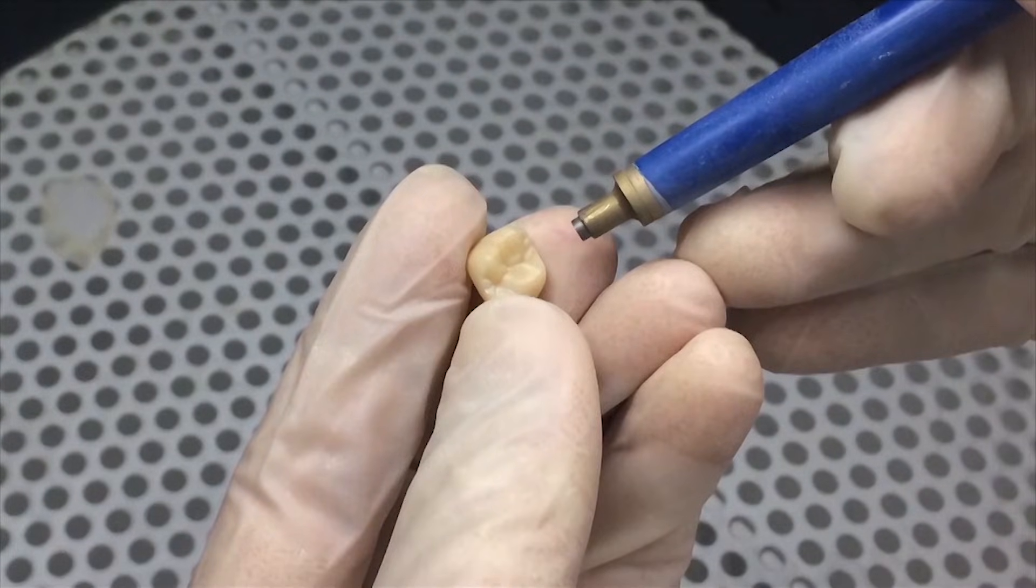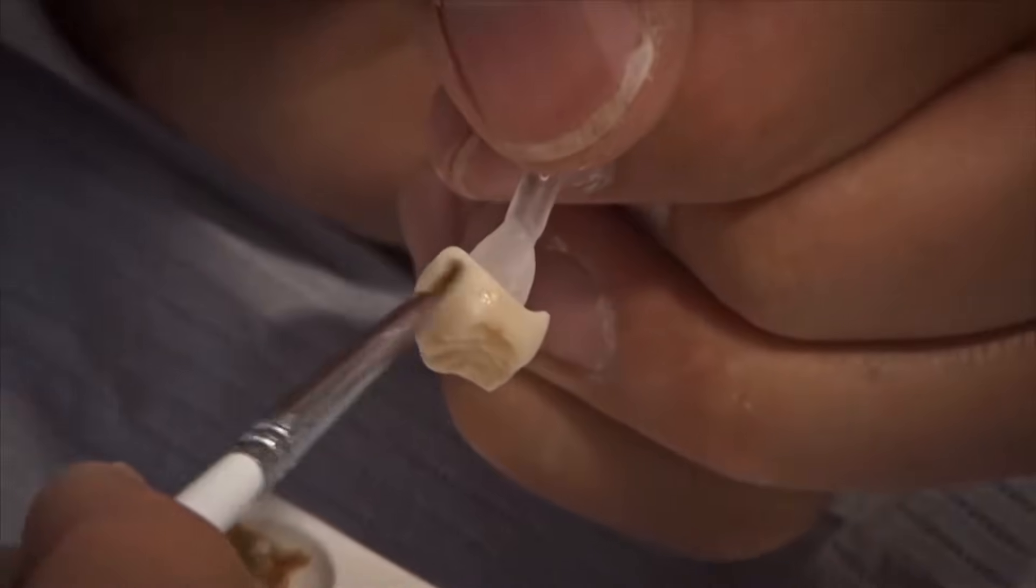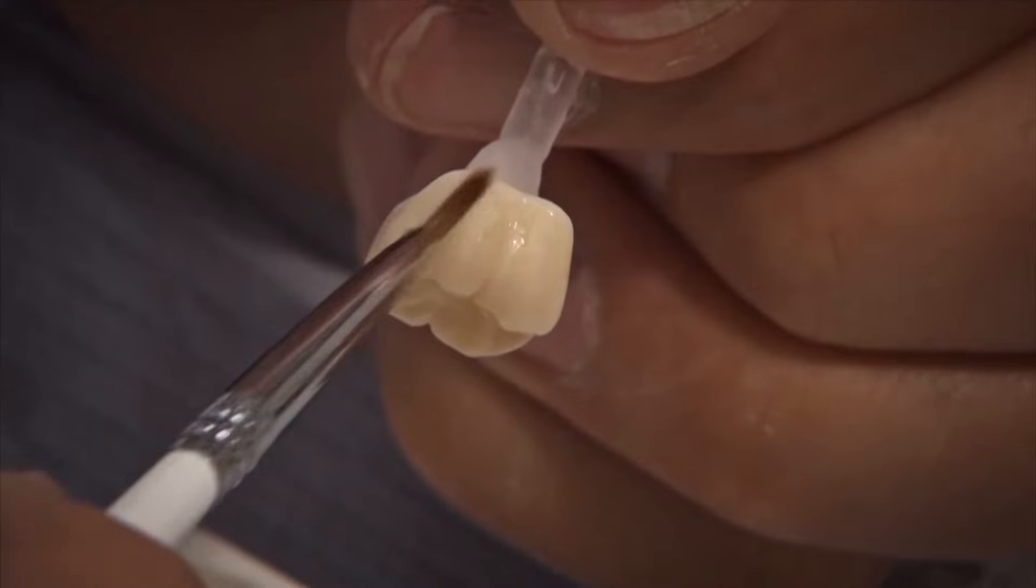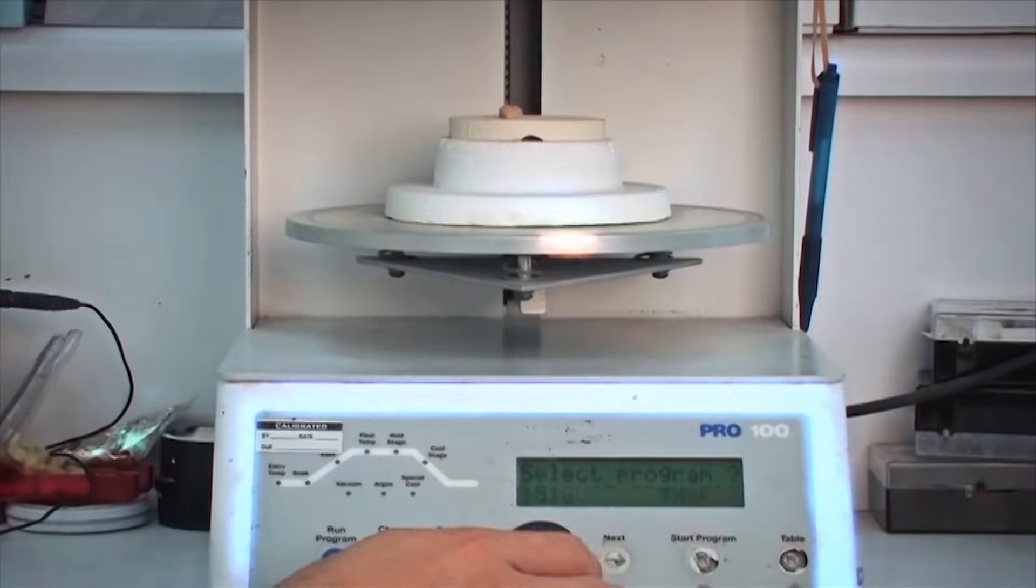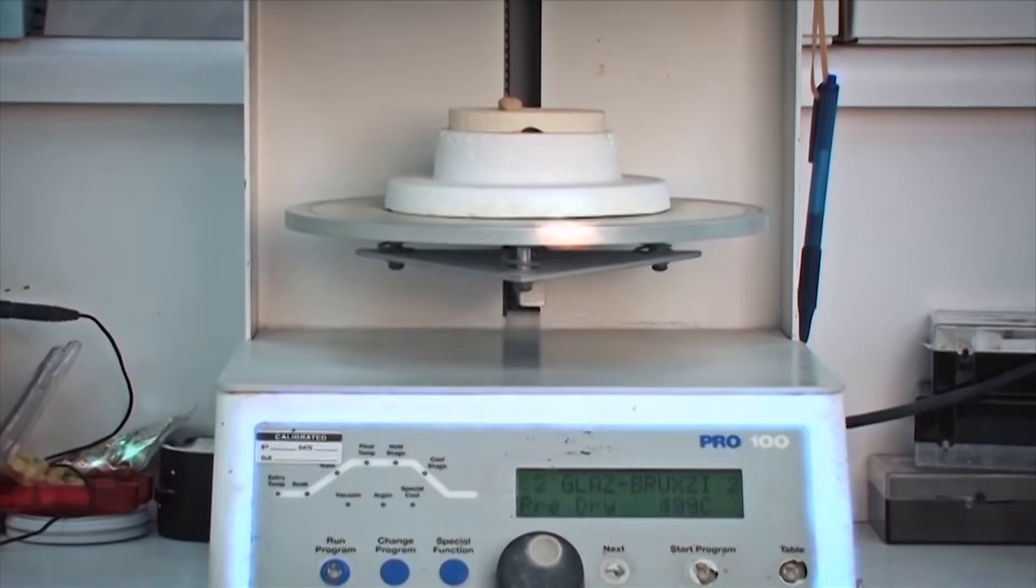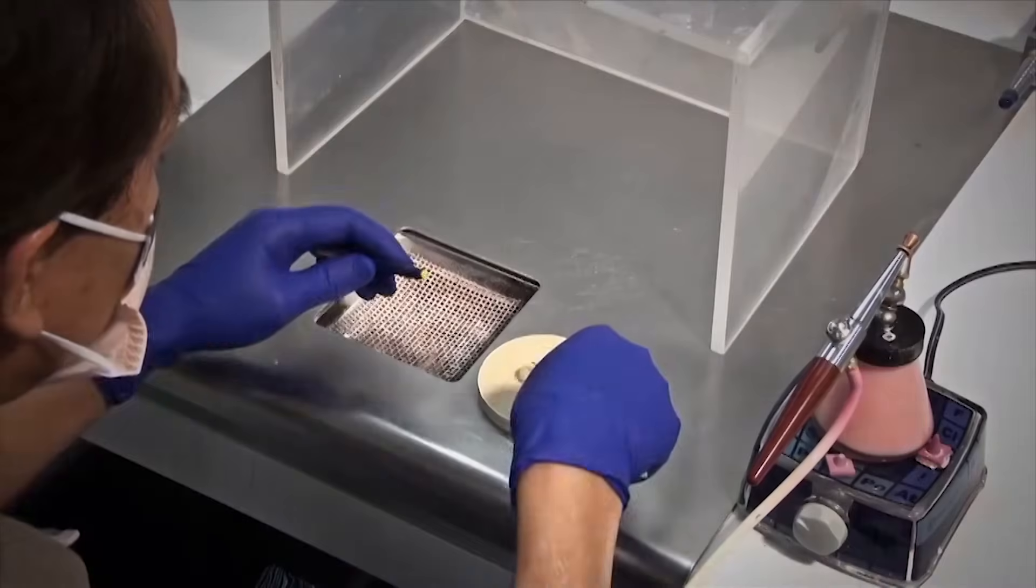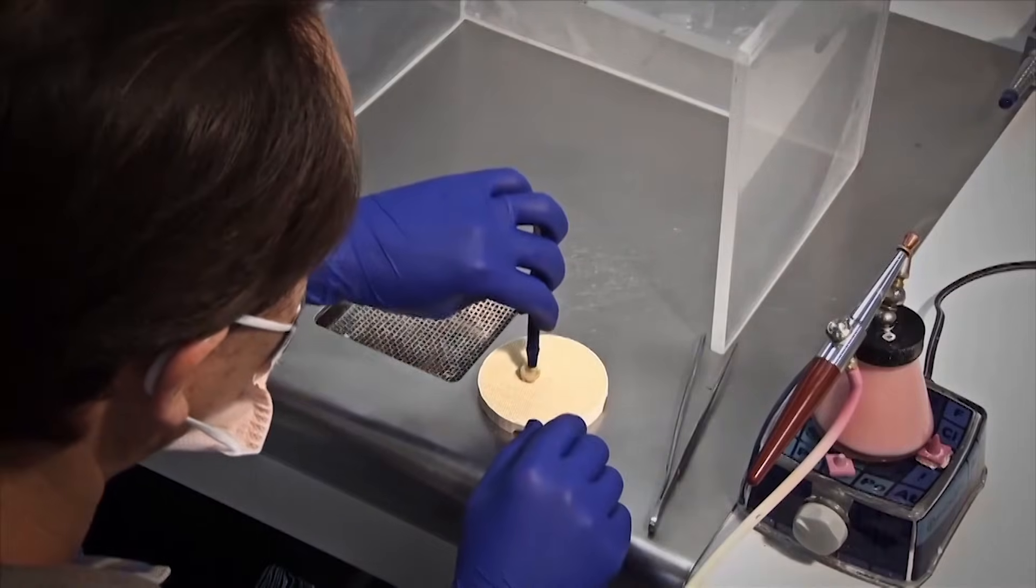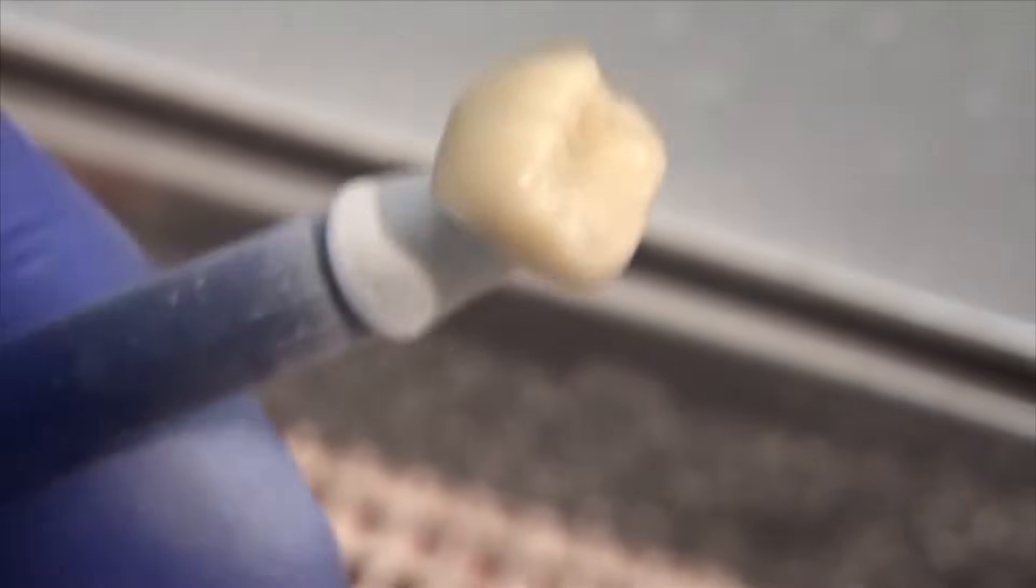Once it comes out, we do a little sandblasting to get it all cleaned up. And now we're going to put some color on it. So this is some staining that's being done to match whatever color the dentist has requested. The block started off as an A2, but there's still a degree of characterization that needs to be done. Typically, we're going to have some translucency by the cusp tips, and we're going to have some increased chroma in the gingival third.